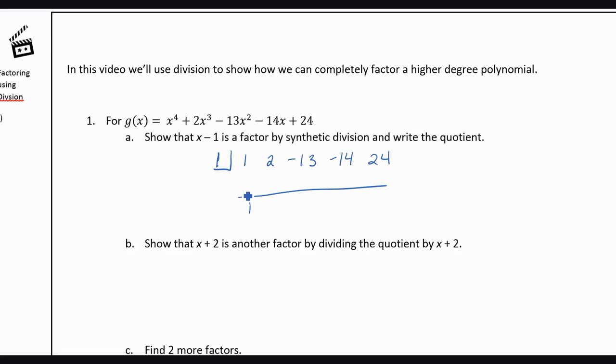Okay, do the synthetic division. So we bring down the 1. 1 times 1 is 1. 2 plus 1 is 3. 3 times 1 is 3. We get negative 10. Negative 10 times 1 is negative 10. We get negative 24. Negative 24 times 1 is negative 24, and we get 0.